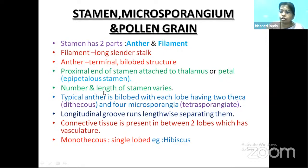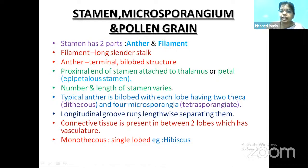Stamens can vary in number and length. In a typical anther it is bilobed, with each lobe having two thecae — that is why it is called dithecous — and the bilobed anther has four microsporangia, so it is called tetrasporangiate. Bilobed, dithecous, tetrasporangiate anther is seen generally in all flowers. In hibiscus, only one theca is present with a single lobe — it is called monothecous. A longitudinal groove separates the lobes, and in the central part between the lobes there is a connective carrying vascular strands for food, water, and minerals.